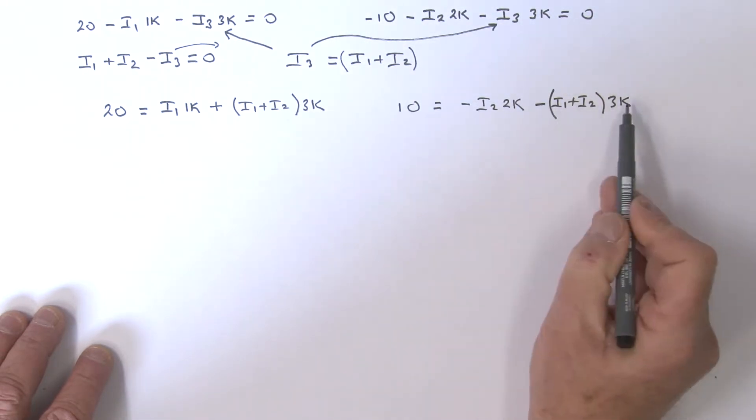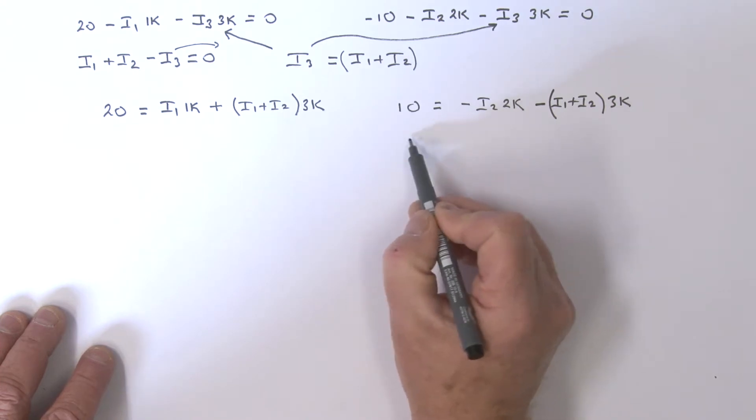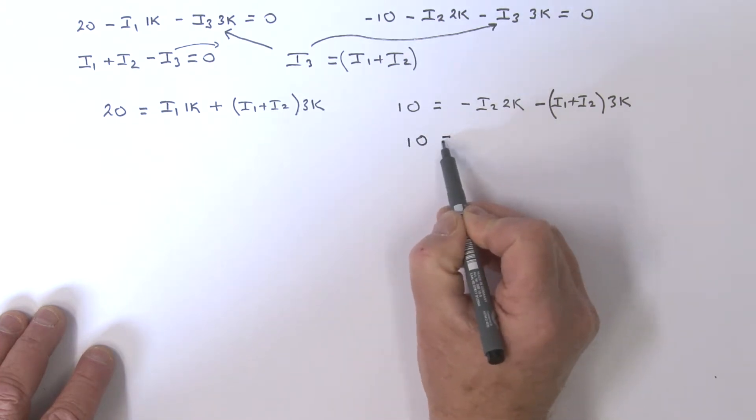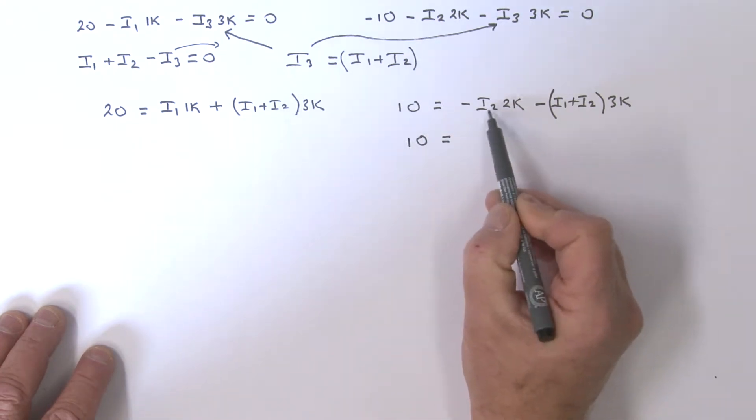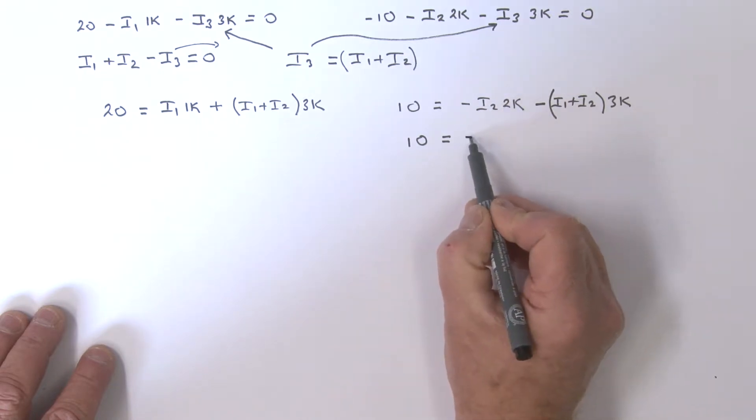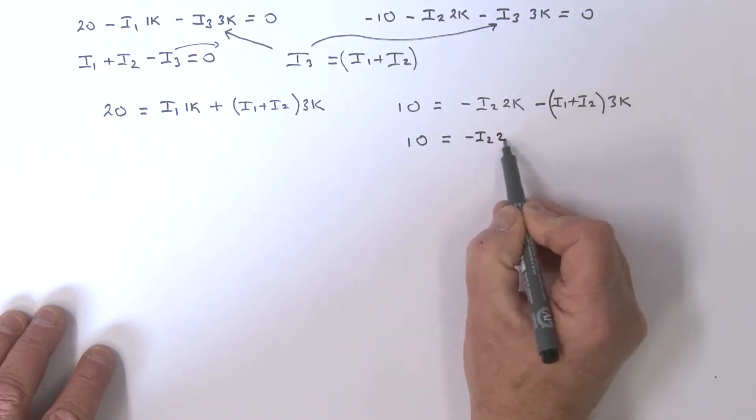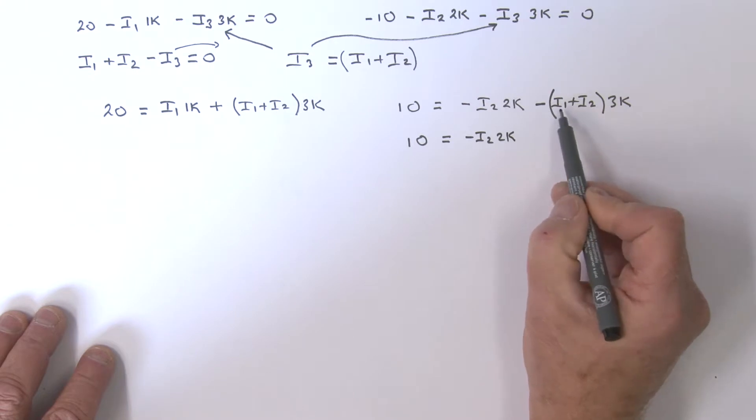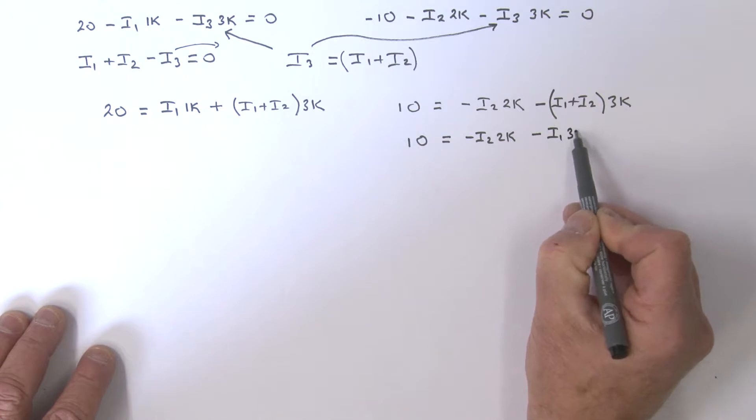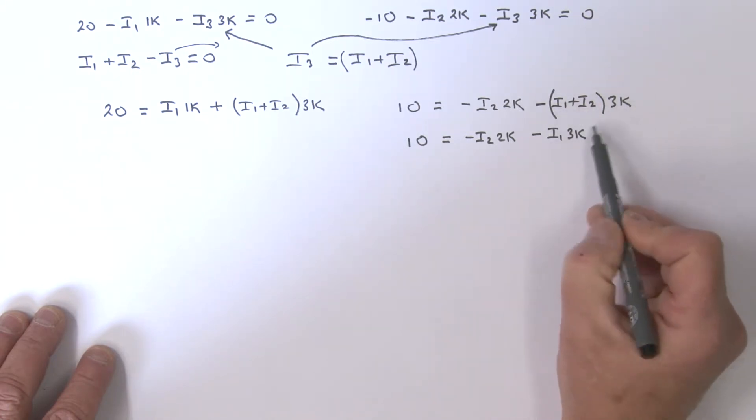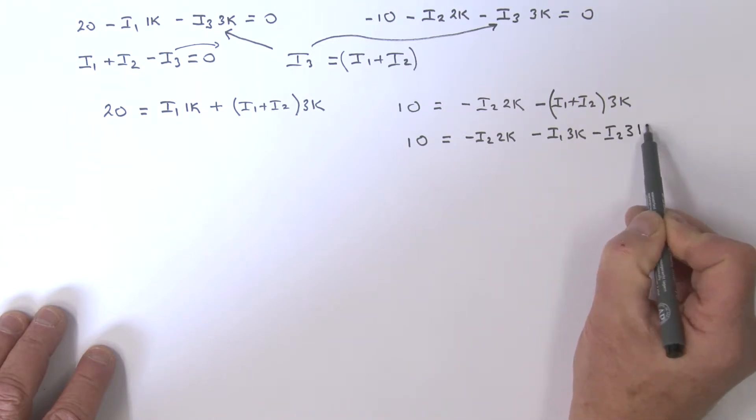Let's expand that bracket. So I've got 10 equals minus i2 times 2k, and then minus i1 times 3k, and minus i2 times 3k.